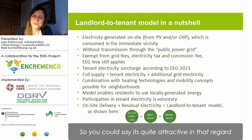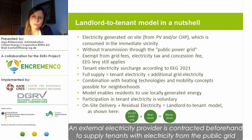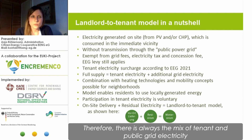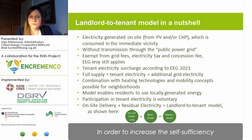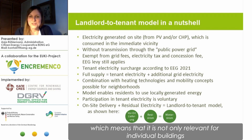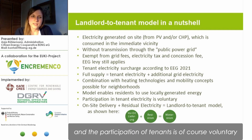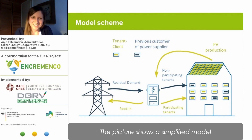Since the EEG 2021, the tenant electricity surcharge is a fixed amount that varies depending on plant size. A few cities such as Munich offer an additional tenant electricity subsidy, making it quite attractive. In case your own produced electricity is not enough, an external electricity provider is contracted beforehand to supply tenants from the public grid, so there is always a mix of tenant and public grid electricity. It is also possible to develop a combination with heating technologies and mobility concepts for quarters and shared buildings. The idea to involve whole quarters and neighborhoods is new since the EEG 2021, and tenant participation is voluntary.